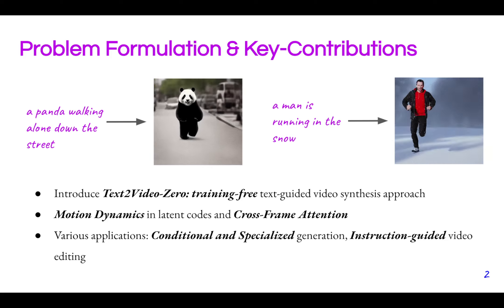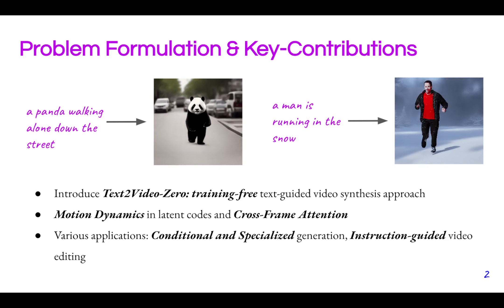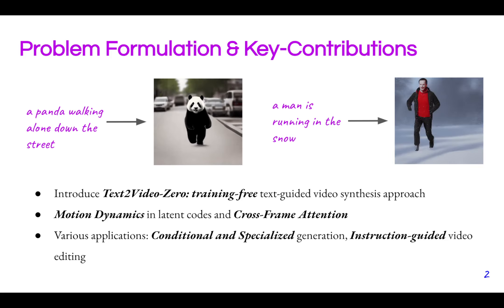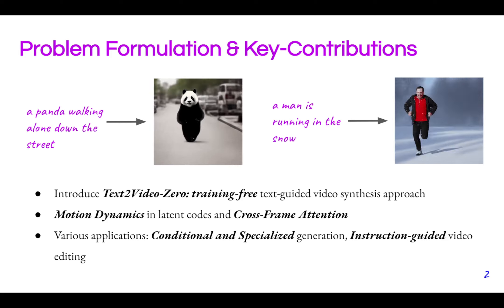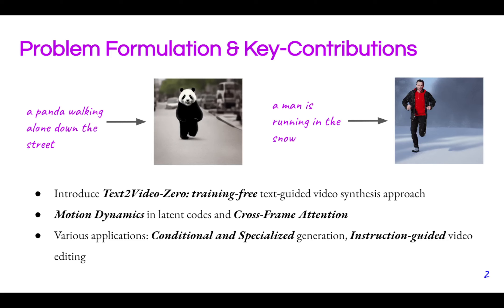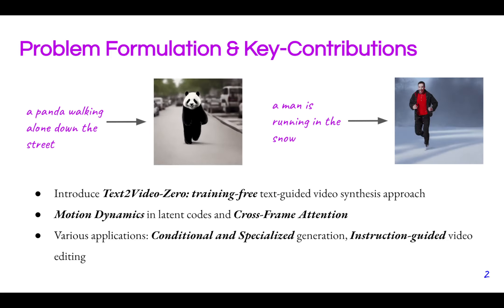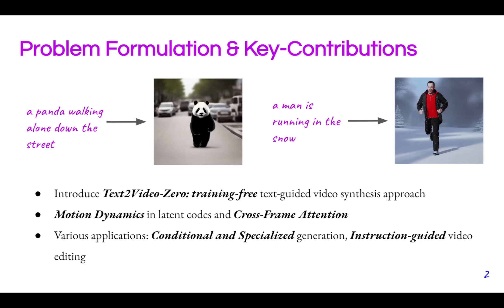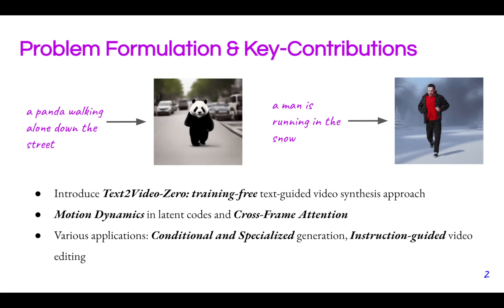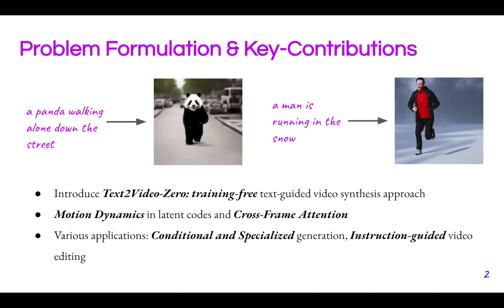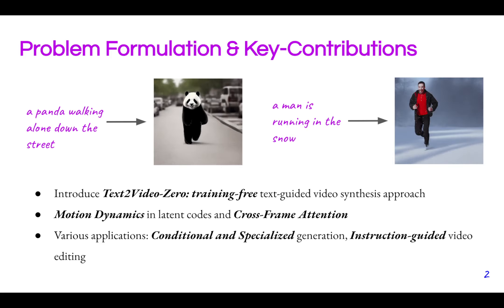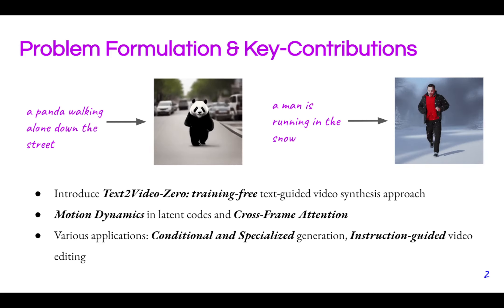To do so, we adopt existing text-to-image diffusion models by enriching their latent codes with motion dynamics and establishing frame connections by cross-frame attention. Moreover, we demonstrate other applications of our method such as conditional and spatialized generation and instruction-guided video editing.